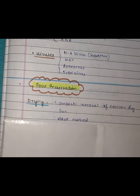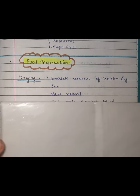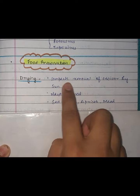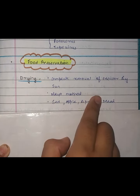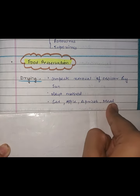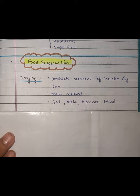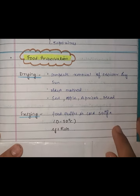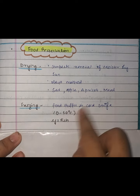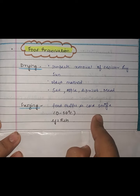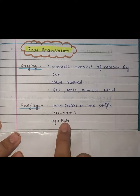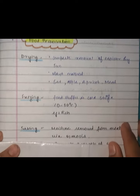Now let's talk about food preservation. The first method is drying — complete removal of moisture by the sun, which is the oldest method. Foods like seeds, apples, apricots, and meat are preserved by drying. Freezing involves keeping food in cold storage, generally under 0–10 degrees Celsius; for example, fish is preserved this way.